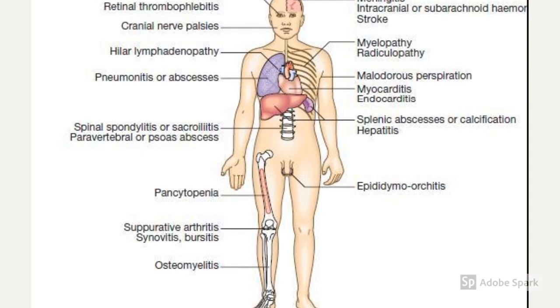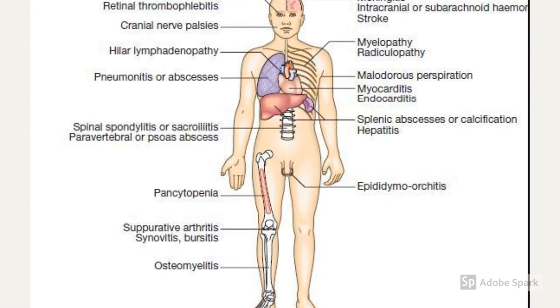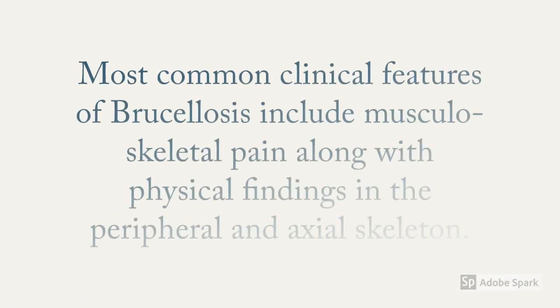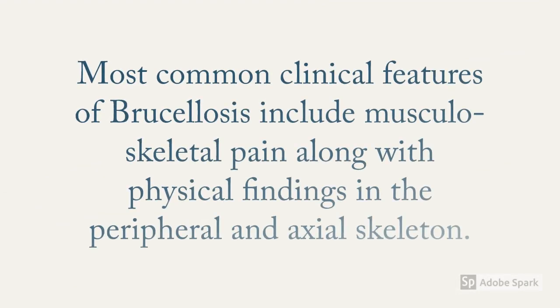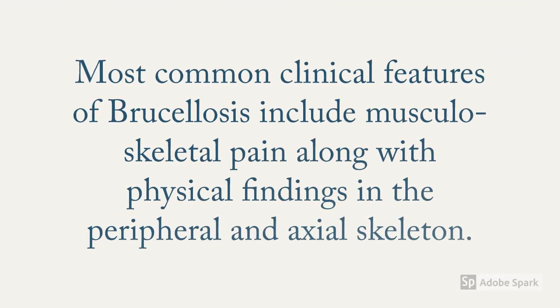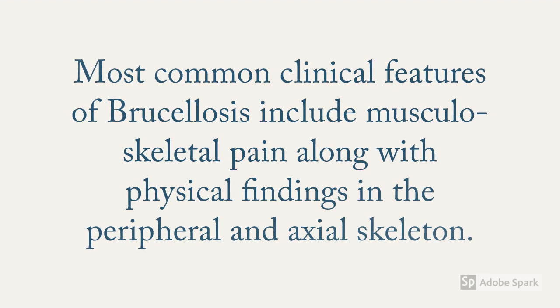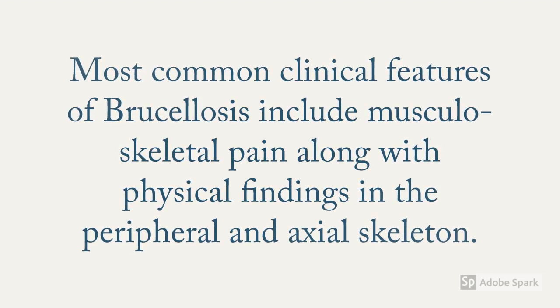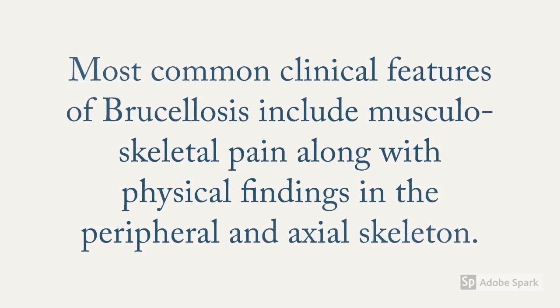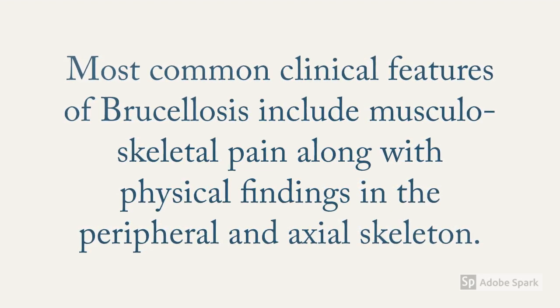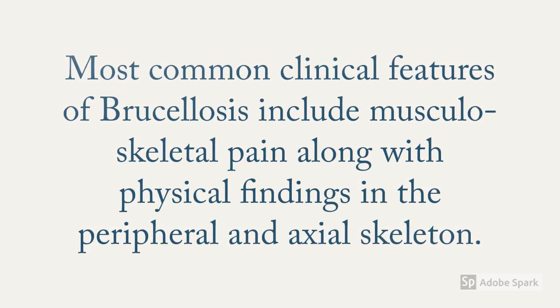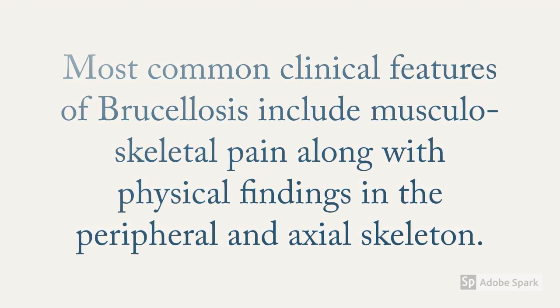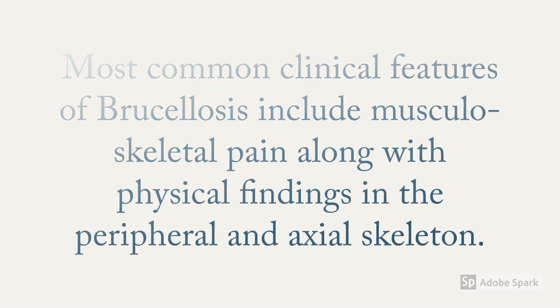The infection can involve any organ from top to bottom. The most common clinical features of brucellosis include musculoskeletal pain along with physical findings in the peripheral and axial skeleton, such as septic arthritis and osteomyelitis. Osteomyelitis caused by Brucella mainly involves the lumbar region and lower thoracic vertebrae.